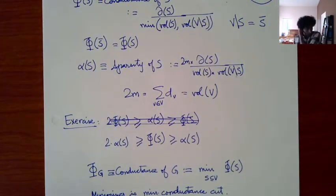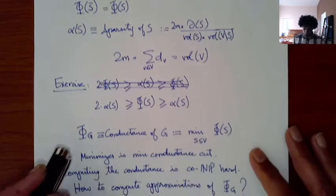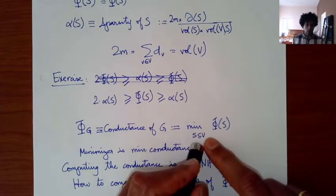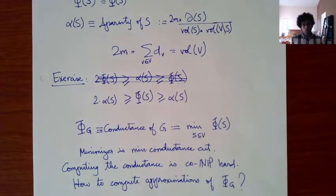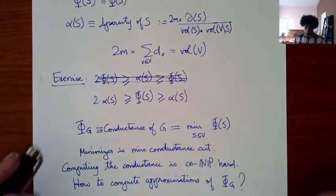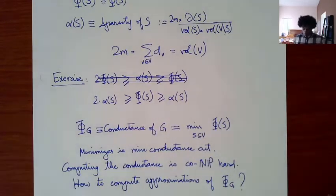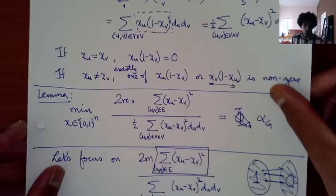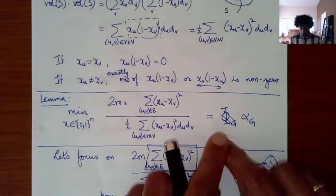We switch between conductance and sparsity because we don't care about constant factor differences. The conductance of the graph φ(G) is the minimum conductance over all sets of the graph. Computing this is a hard problem, so how do we compute approximations? Last time we did a fair bit of work, and one thing we were able to show is the following.